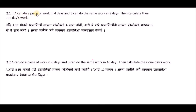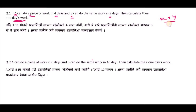If you can do a piece of work in four days, then calculate your one day's work. One day's work is one over four. We can express the combined formula as x plus y divided by x into y.